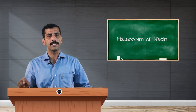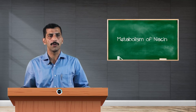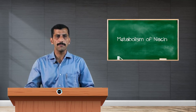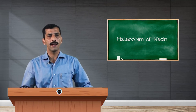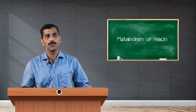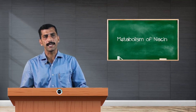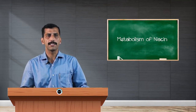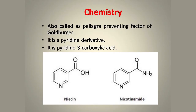Now let us have a more detailed discussion about niacin. Niacin is one of the B complex vitamins. It is called the pellagra-preventing factor of Goldberger, because the scientist Goldberger discovered the disease called pellagra and found that deficiency of the chemical substance niacin causes this disease. Structurally, niacin is a pyridine derivative and is called pyridine-3-carboxylic acid. It is present in two forms: aldehyde form and amino form.